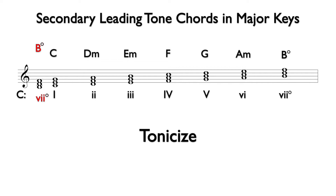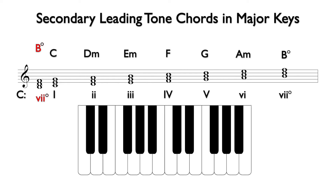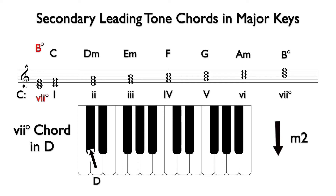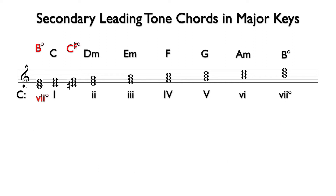To find the secondary leading tone chord of D minor, we find the seven diminished chord in the key of D, which is always a minor second below. Therefore, the seven diminished chord of D minor is C sharp diminished. We analyze this chord as the seven diminished of two. Notice that the C sharp diminished chord has a chromatic note — the C sharp. Since secondary leading tone chords are chromatic chords, we expect one or more accidentals.